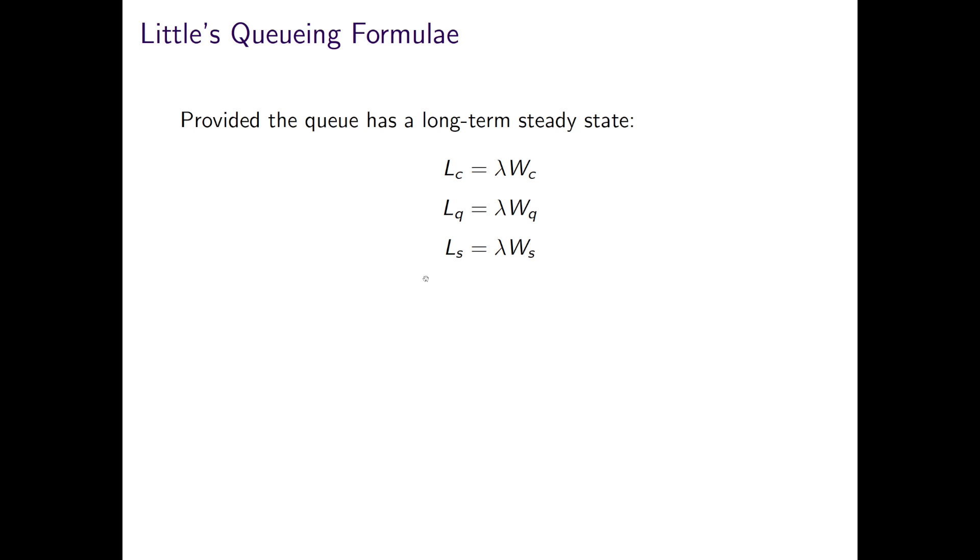Here the indices denote the number in the system, the numbers in the queue, and the numbers being served. So for the M/M/1 system, we can write down what these would be in terms of lambda and mu. Note here rho is what we call the traffic intensity and is calculated for an M/M/1 by lambda divided by mu.